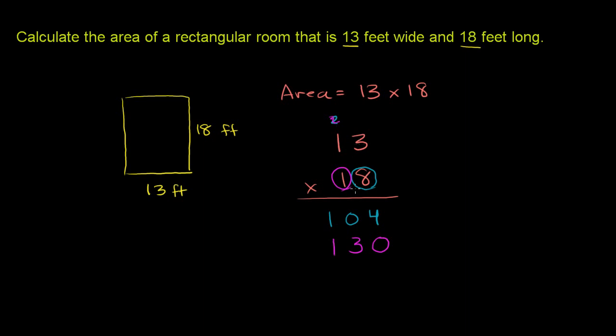So you see that 8 times 13 is 104. 1 times 13—or we should say 10 times 13, because that 1 is in the tens place—is 130. 18 is the sum of 10 and 8.